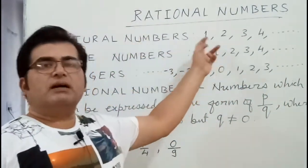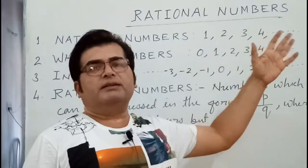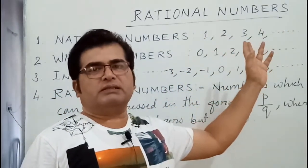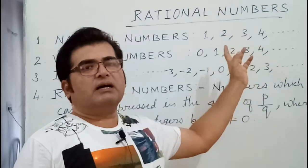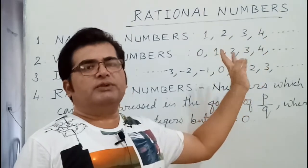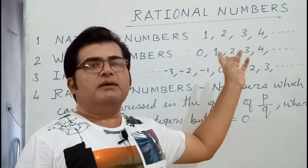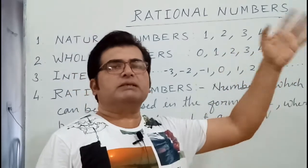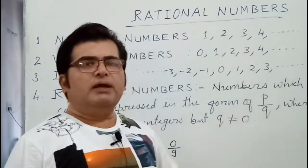So natural numbers are from 1 to infinity. They all are positive numbers. Natural numbers are from 1 to infinity, they are the counting numbers like 1, 2, 3, 4, 5, 6, 7, 8, 9, 10 up to infinity.